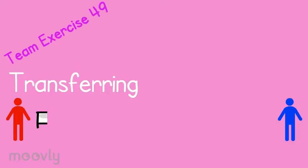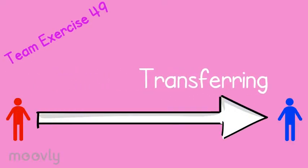Team exercise 49: Transferring. During the exercise, the team will stand in two lines facing each other. The trainer tells the team which is line A and B.